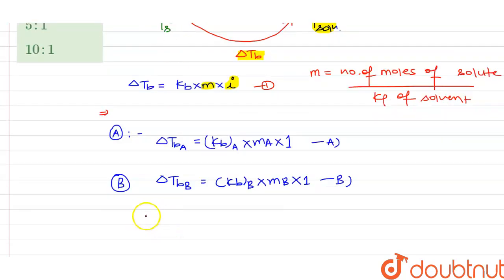then we will get ΔTbA divided by ΔTbB equals KbA multiplied by mA divided by